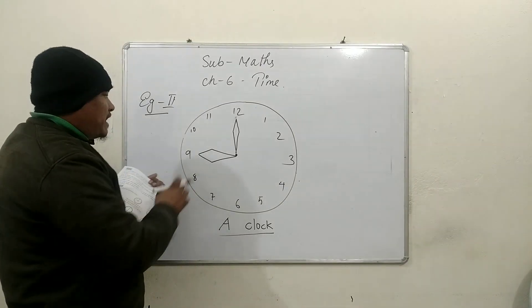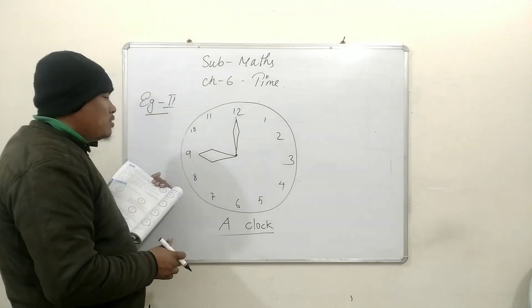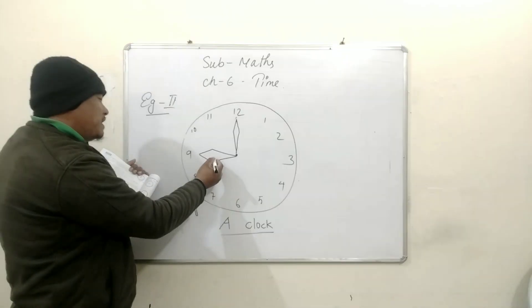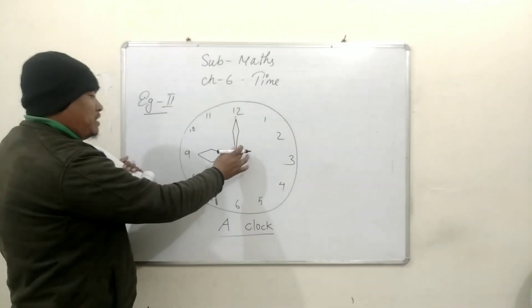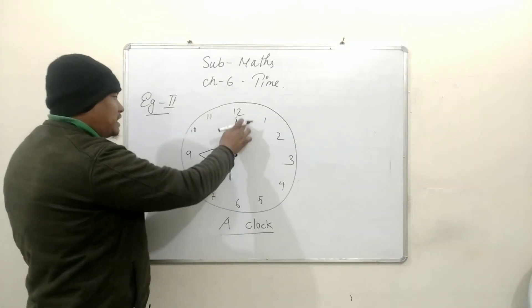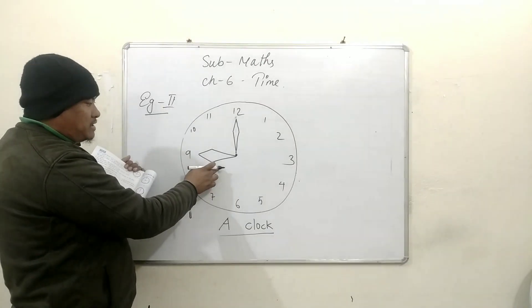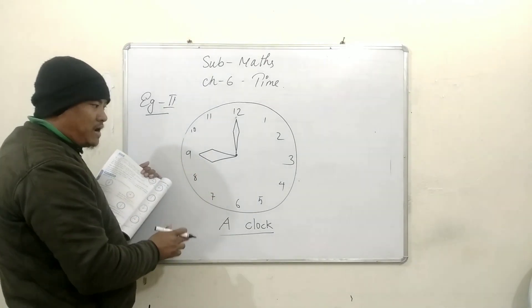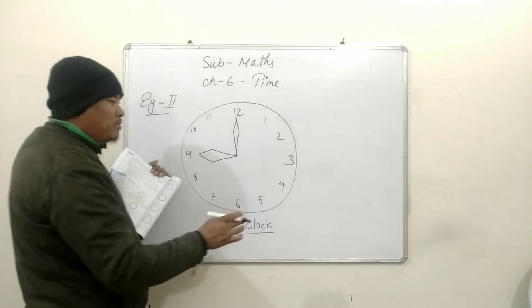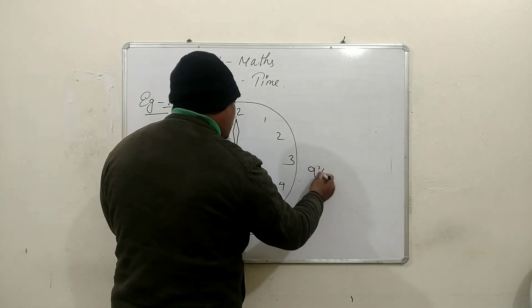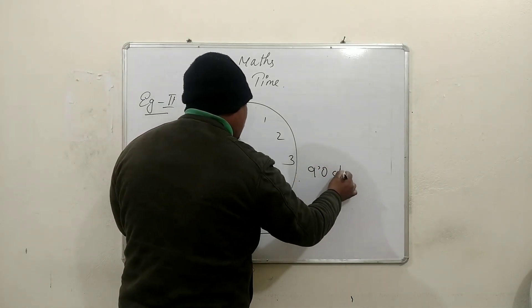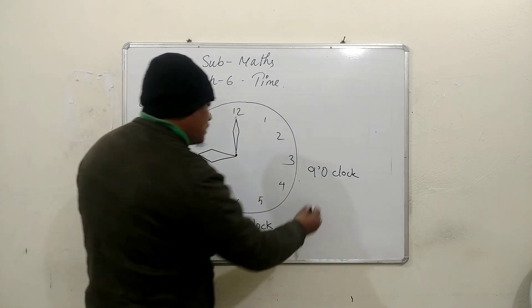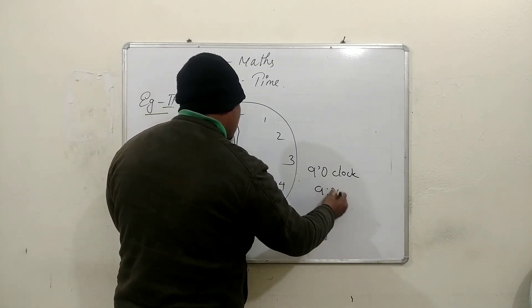This is example 2. As you can see, the minute hand is exactly on 12 and the hour hand is exactly on 9. So children, the time is 9 o'clock. We can also write this in this form.